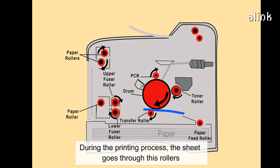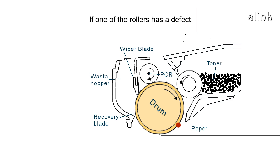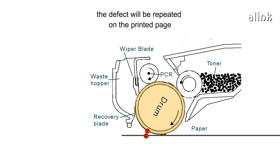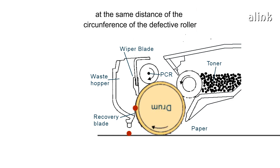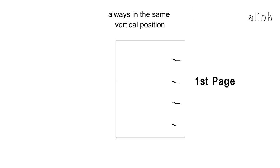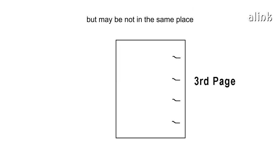During the printing process, the sheet goes through these rollers. If one of the rollers has a defect, the defect will be repeated on the printed page at the same distance of the circumference of the roller, always in the same vertical position, but maybe not in the same place.